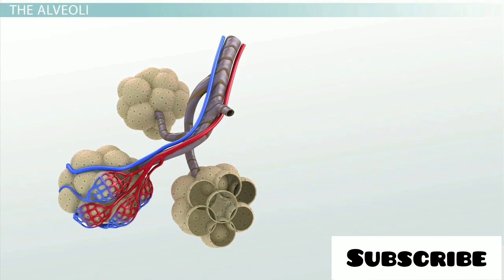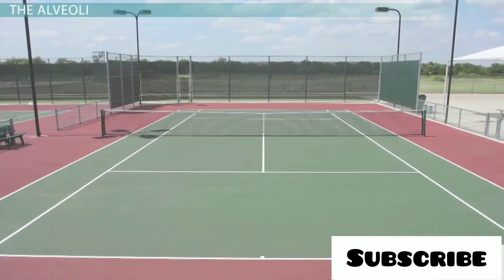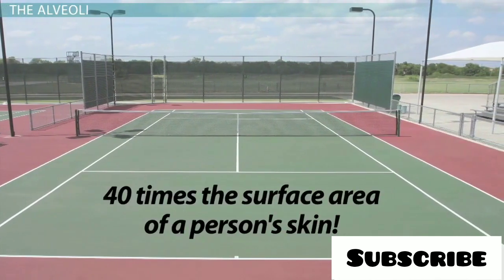The average human lung has about 500 million alveoli, with a combined inner surface area that is about the same size as half of a full-sized tennis court. That's 40 times the surface area of a person's skin.